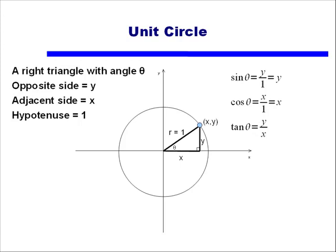You'll notice I've only talked about these three trig functions. We also have cosecant, secant, and cotangent. However, because these are simply reciprocals of sine, cosine, and tangent, my discussions from here on will generally deal with only sine, cosine, and tangent. From this you should be able to figure out that cosecant of theta is 1 over y, secant of theta is 1 over x, and cotangent of theta is x over y.